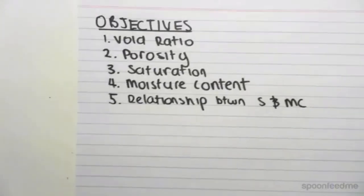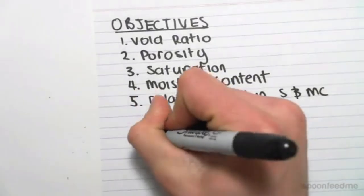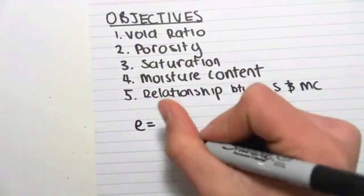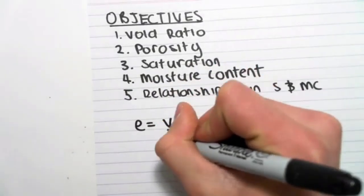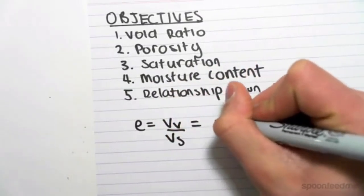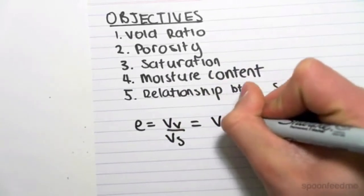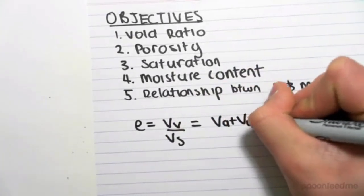So first up, the void ratio. The void ratio is given by the symbol E, where E equals the volume of the voids on the volume of the solids, which you can rewrite because we know the volume of the voids is the volume of the air plus the volume of the water.